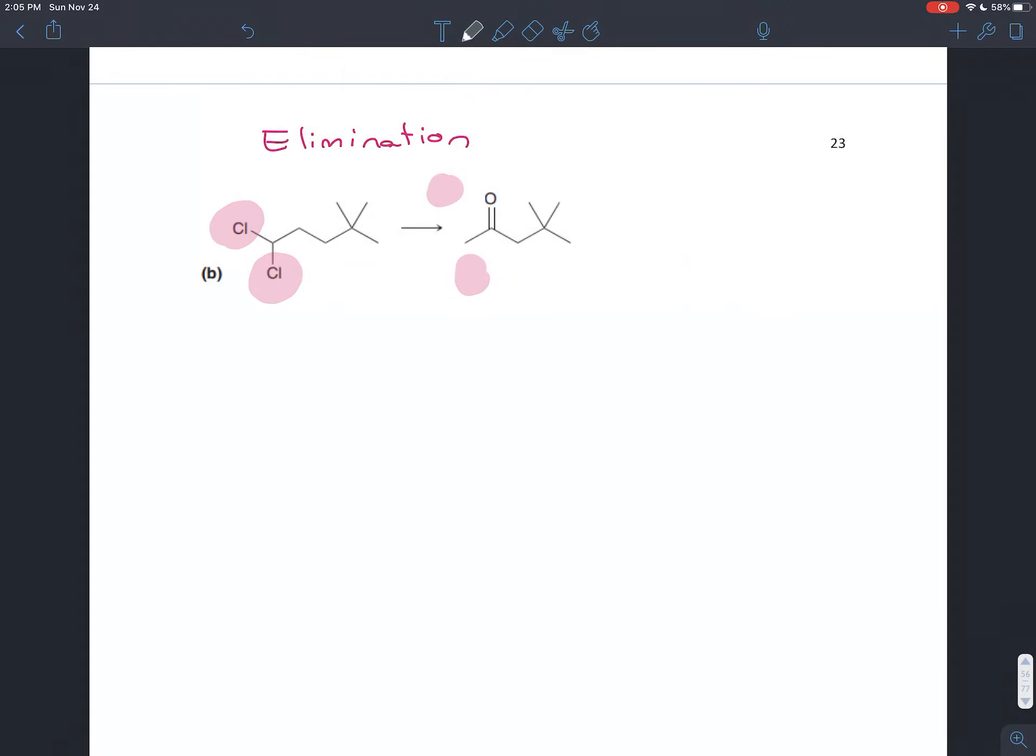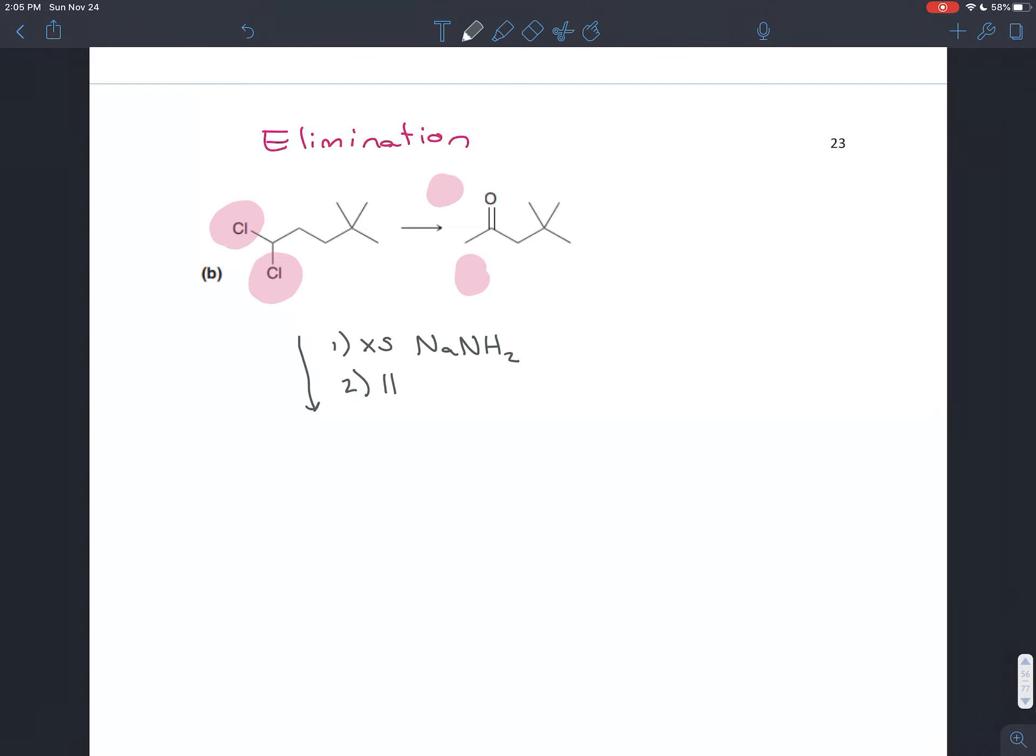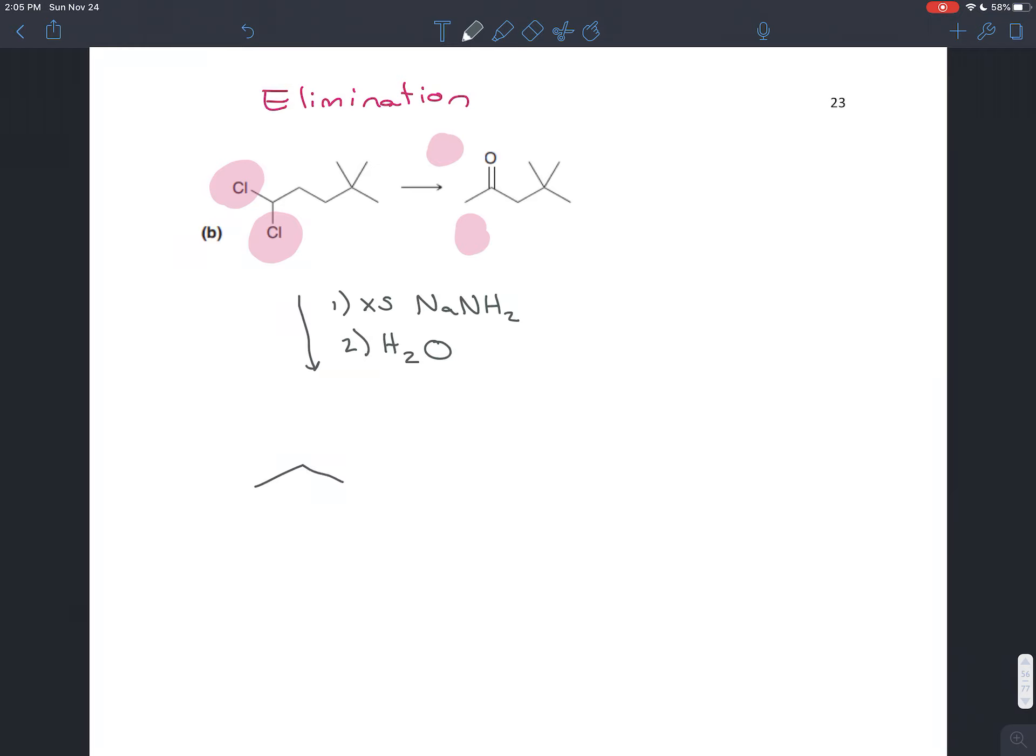How do you eliminate two things? Use excess sodium amide NaNH2 followed by a water wash H2O. That gives you the same carbon chain.